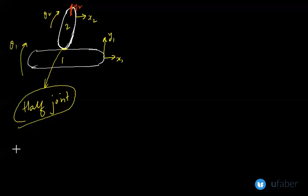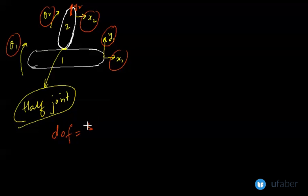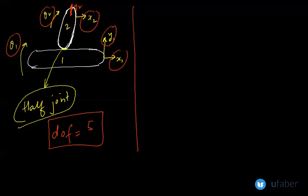So half joint is a joint which eliminates one degree of freedom and the degree of freedom for this system is one, two, three, four and five. So this is a concept that we need to remember at all times. Full joint eliminates two DOFs and half joint eliminates one DOF.